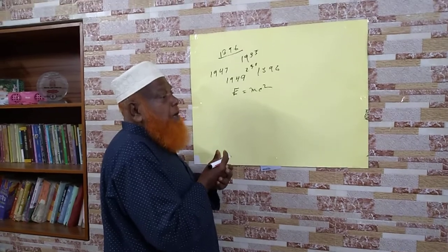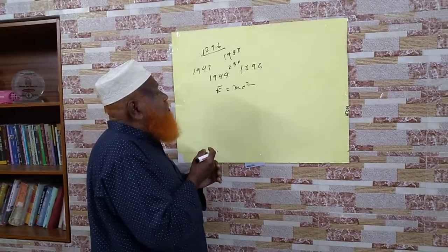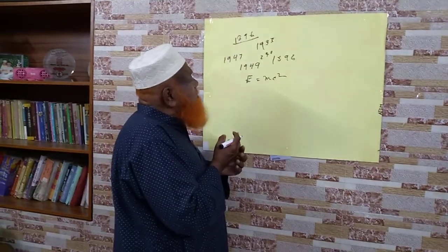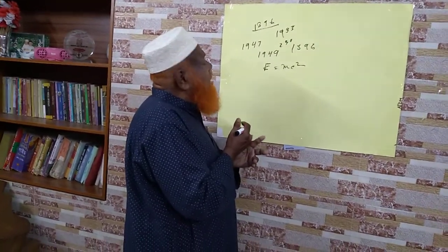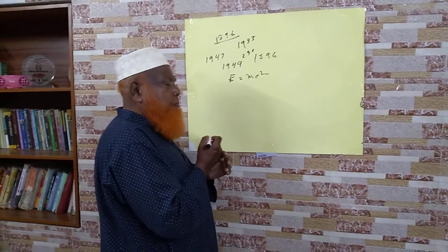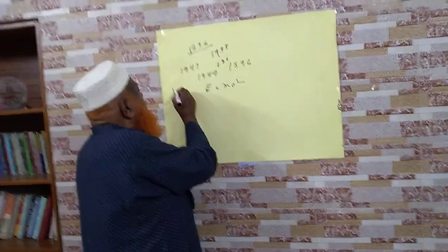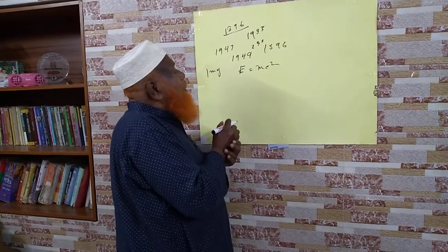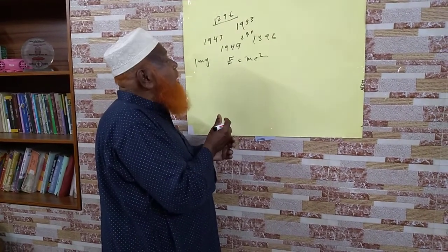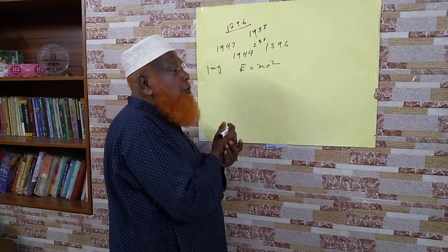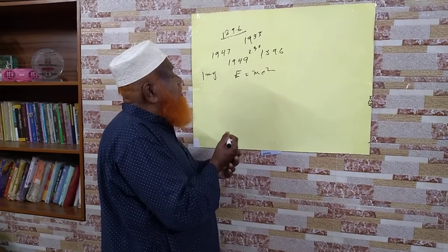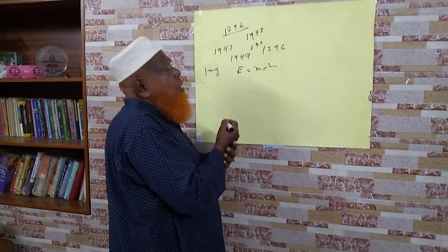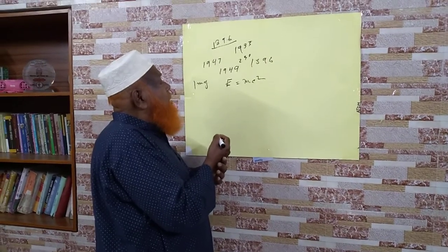Where E is the energy, m is the mass which is converted into energy, and c squared is the square of the velocity of light, which is a very, very large quantity. The mass being multiplied by this very large quantity c squared, the energy produced is very high even for quite a small amount of mass. It has been found that if one milligram of mass is converted into energy, it is equivalent to the burning of 2.6 tons of coal. And if one pound of uranium is converted into energy, it is equivalent to a very large explosive charge.